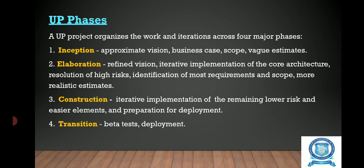The Unified Process phases. The Unified Process project organizes the work and iterations across four major phases: inception, elaboration, construction and transition. Inception is approximate vision, business case, scope and vague estimates. Elaboration is refined vision, iterative implementation of the core architecture, resolution of high risk, identification of most requirements and scope, and more realistic estimates. Construction is iterative implementation of the remaining lower risk and easier elements and preparation for deployment. Transition is beta test and deployment.